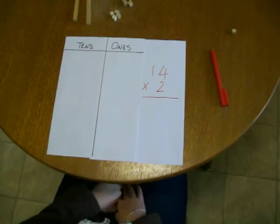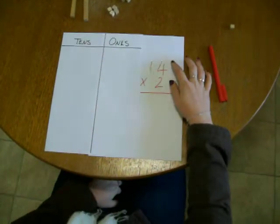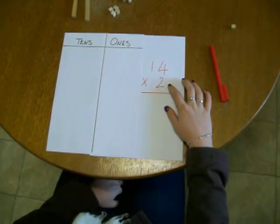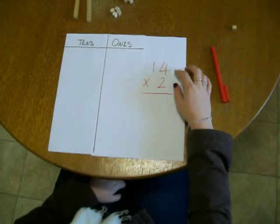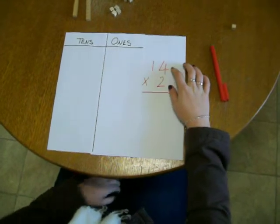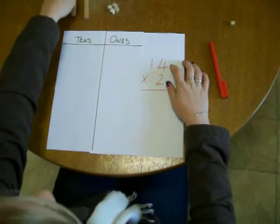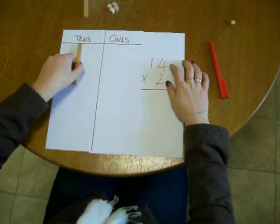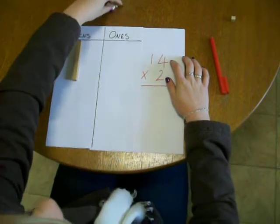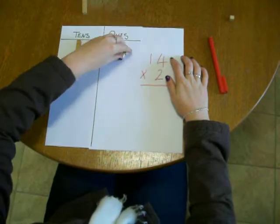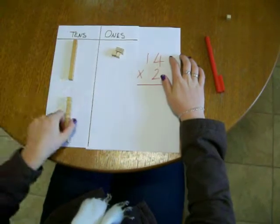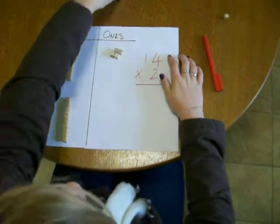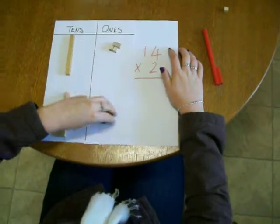Now we're going to model 14 multiplied by 2. So we need to build two groups of 14: one 10 and four 1's, and another 10 and four 1's.